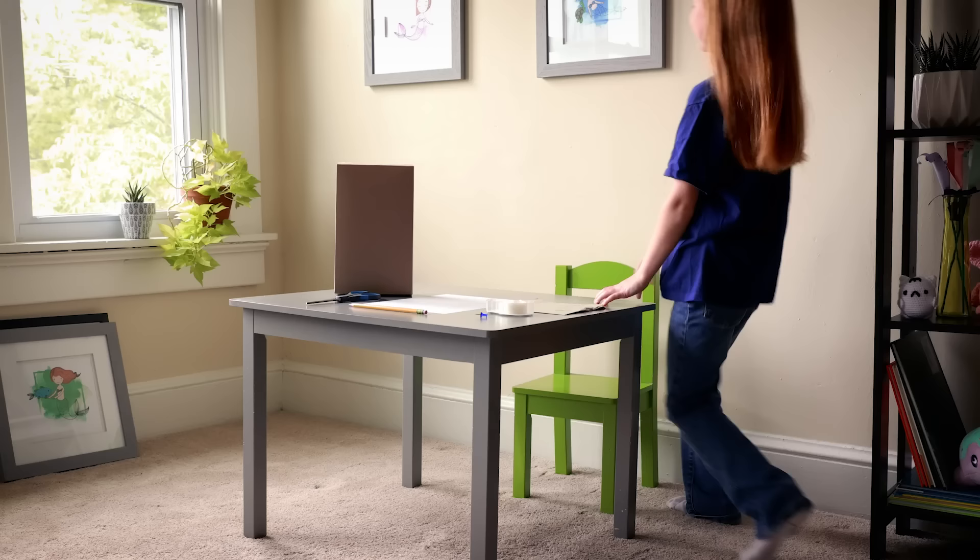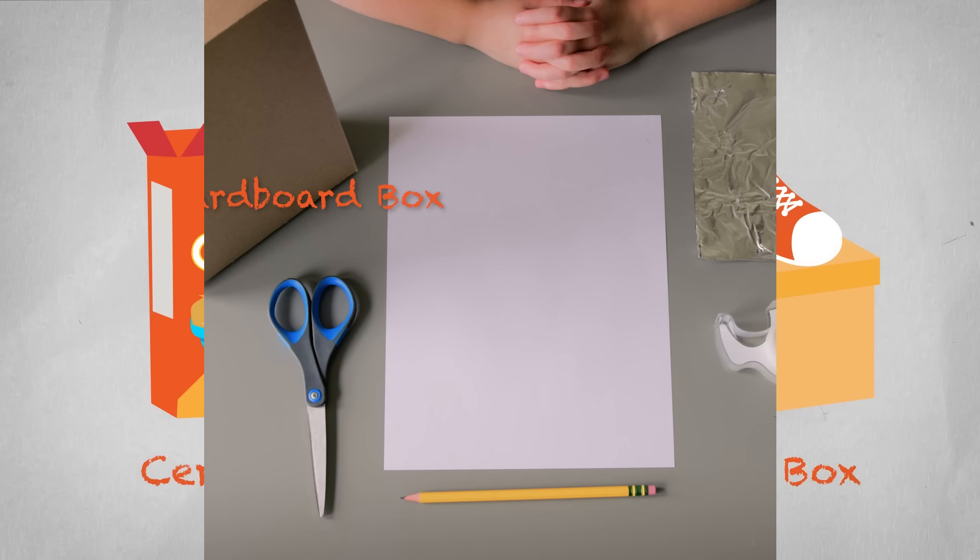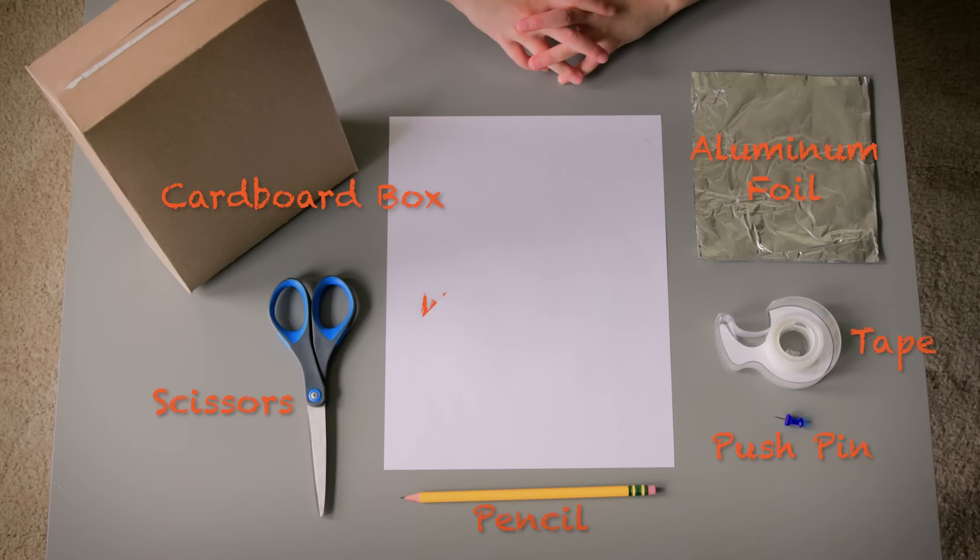To get started, you'll need a cardboard box—cereal boxes or shoe boxes are great. You'll also need scissors, aluminum foil, a pencil, a pushpin, some tape, and a white piece of paper big enough to cover one end of the box.